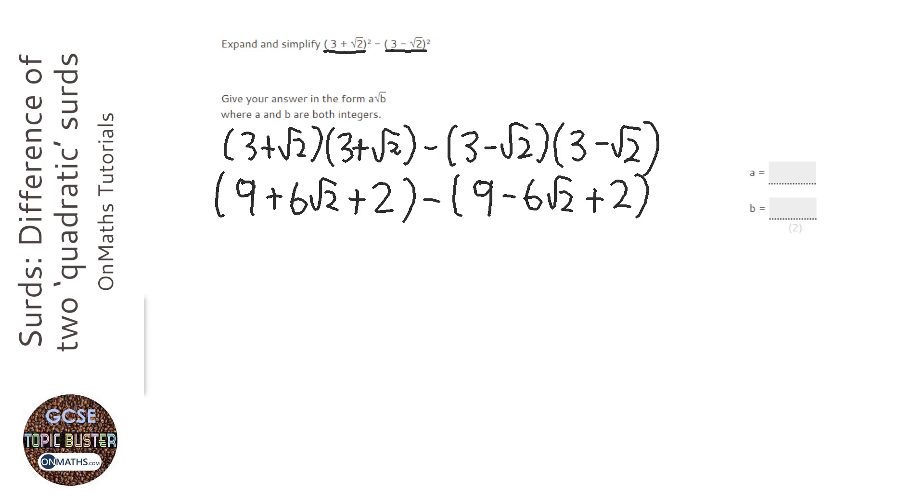Now, the reason I kept them in brackets is because this is really important. There's a minus 1 there, and it means we've got to multiply everything in the second bracket by minus 1.